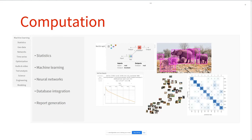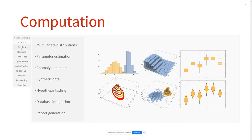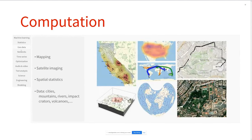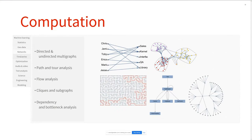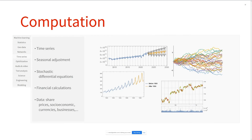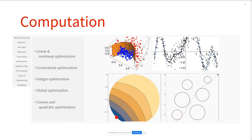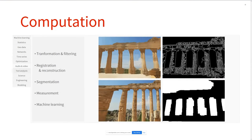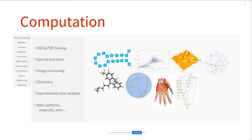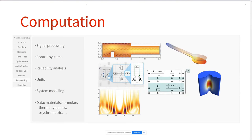In our world, what used to be called AI has really come to be thought of much more as computation. These collections of deterministic, defined rules of behavior cover all kinds of different areas — things that are more modern like machine learning, things a little bit older like classical statistics. Structured inputs can be things like geographic information, graphs and networks, social networks, time series, optimization, audio, video, and text analysis, as well as very specialized domains in science and engineering. It's a very big area; a lot of it has taken at least 50 years to build up.